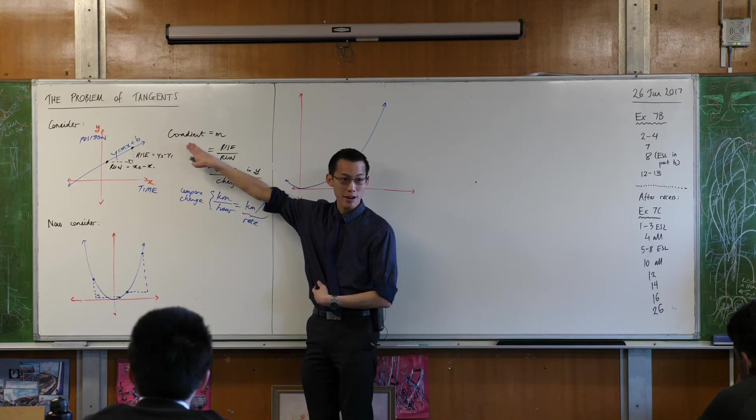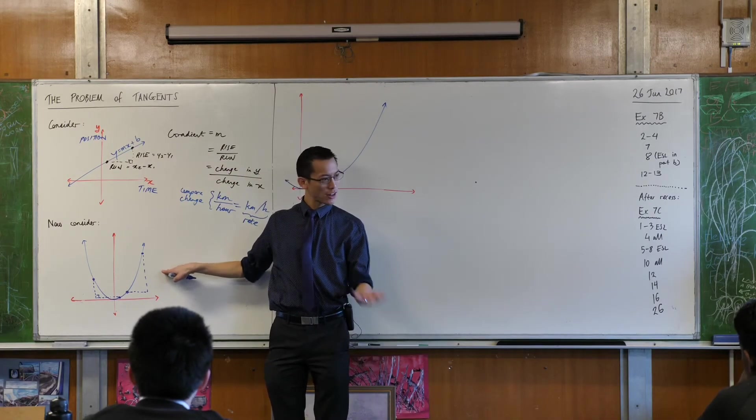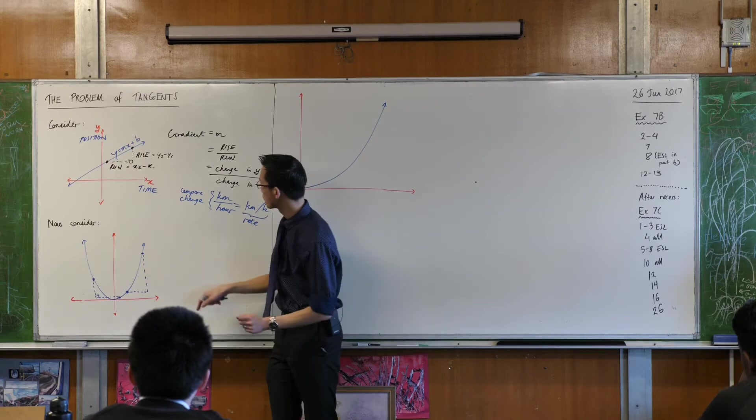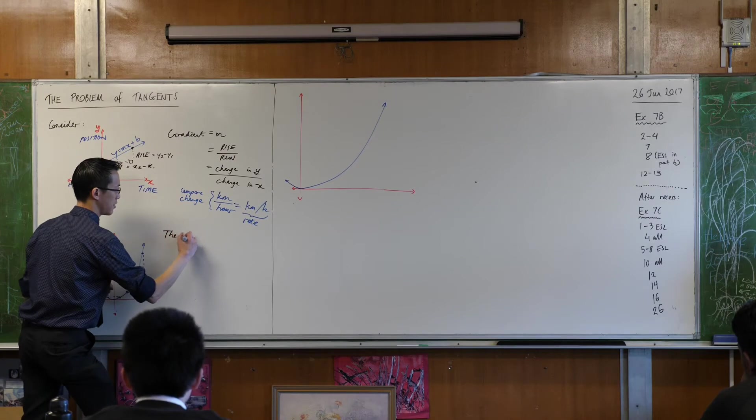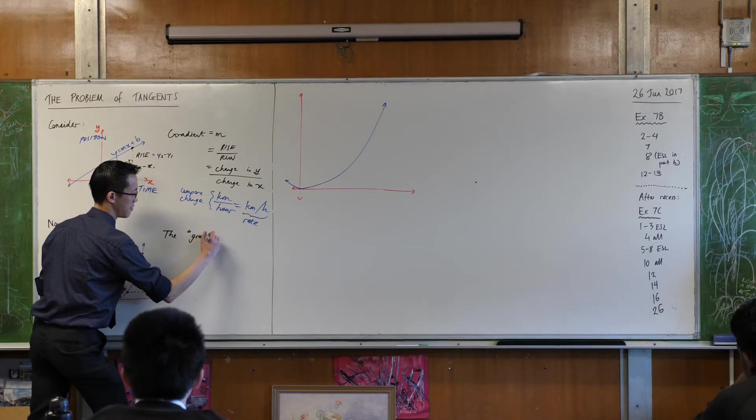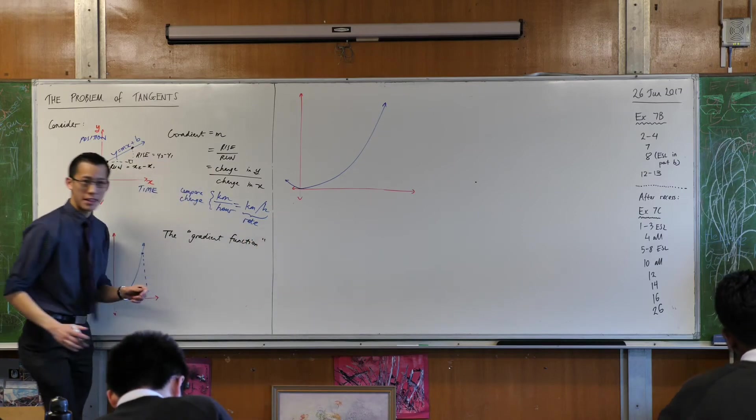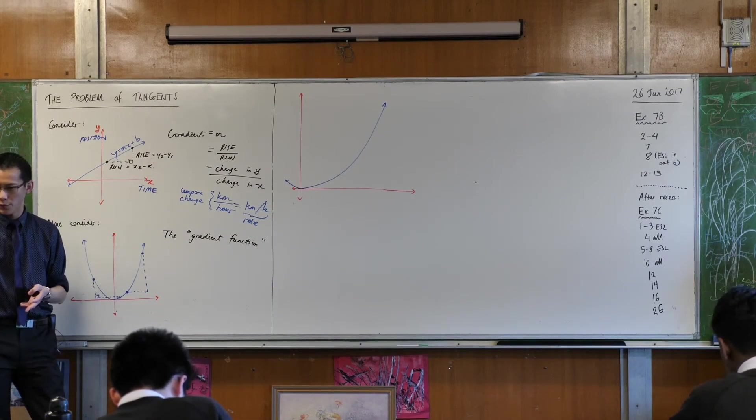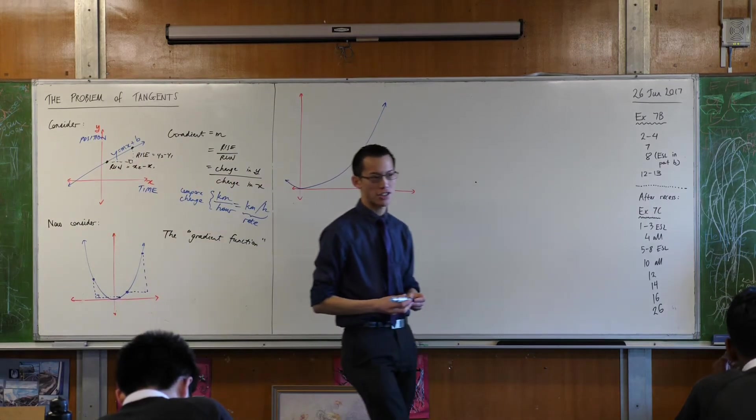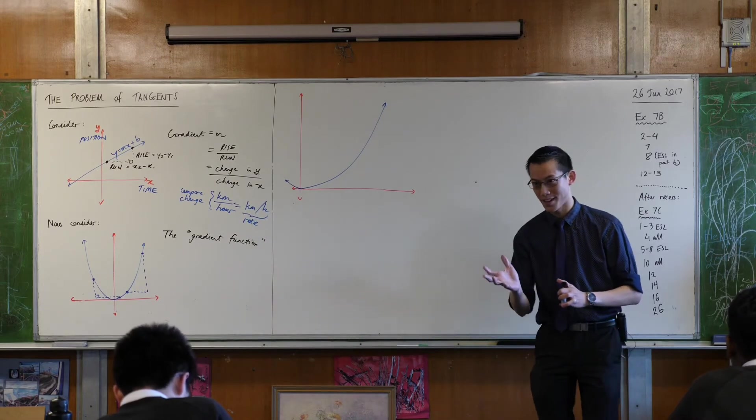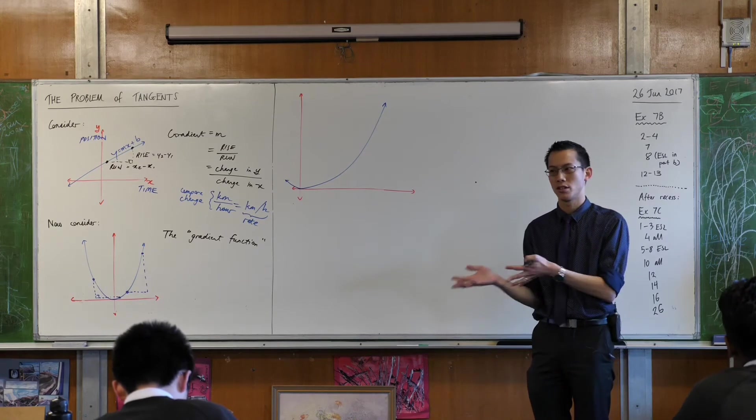So we no longer call it a gradient, borrowing on some language from our previous topic, we call it a gradient function, because it can change. So let me just write that down here. The gradient function. Think about all the stuff you know about functions already. In fact, if you still have the pages there, turn back to where we define a function. A function is, if you might remember, I'll give you a bit of a nudge. A function is a special kind of equation. What's special about it? Because not every equation is a function.